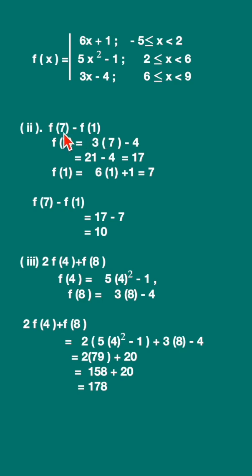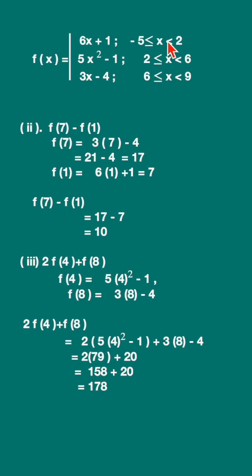For the second sum, f(7) - f(1): 7 is in the range 6 < x < 9, so we use f(x) = 3x - 4, substitute x = 7 and simplify. For f(1), x = 1 is in [-5, 2), so we use f(x) = 6x + 1, which gives 7. Then f(7) - f(1) = 10.